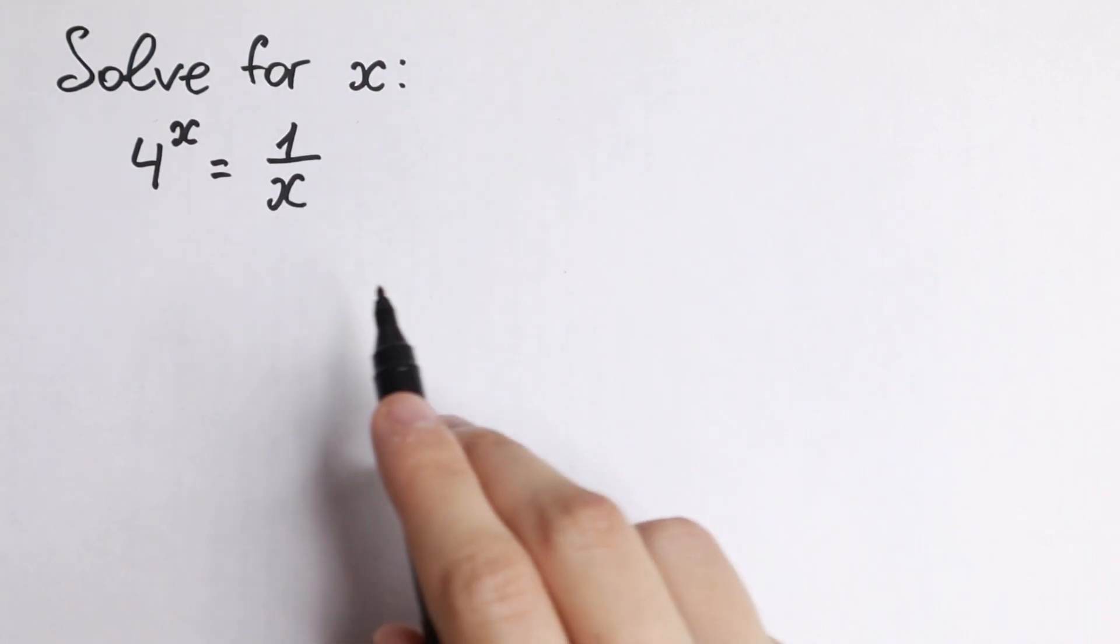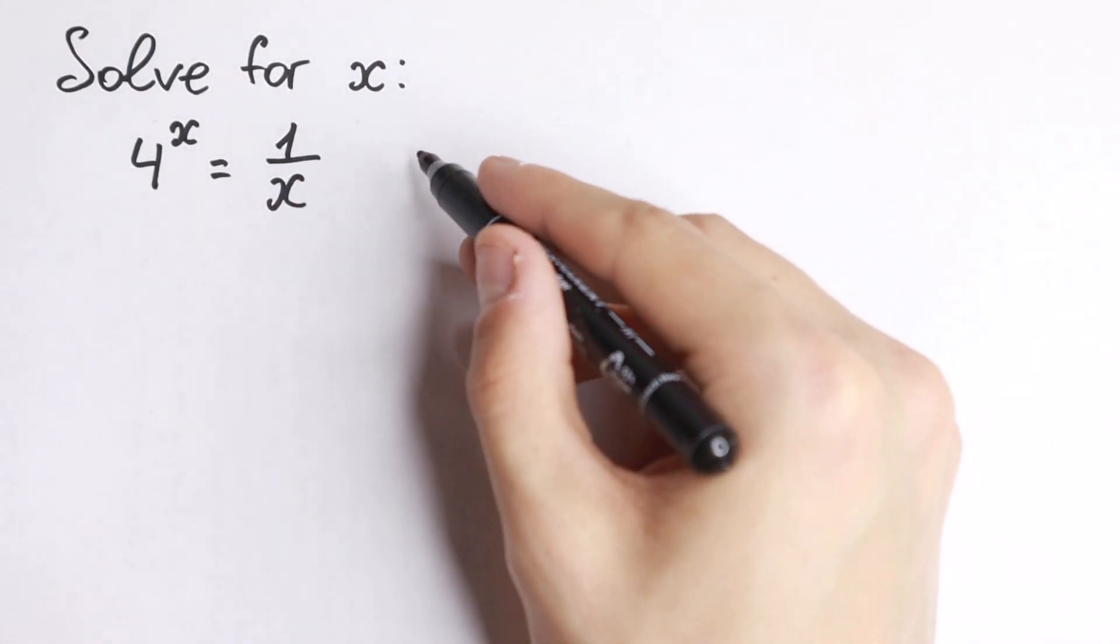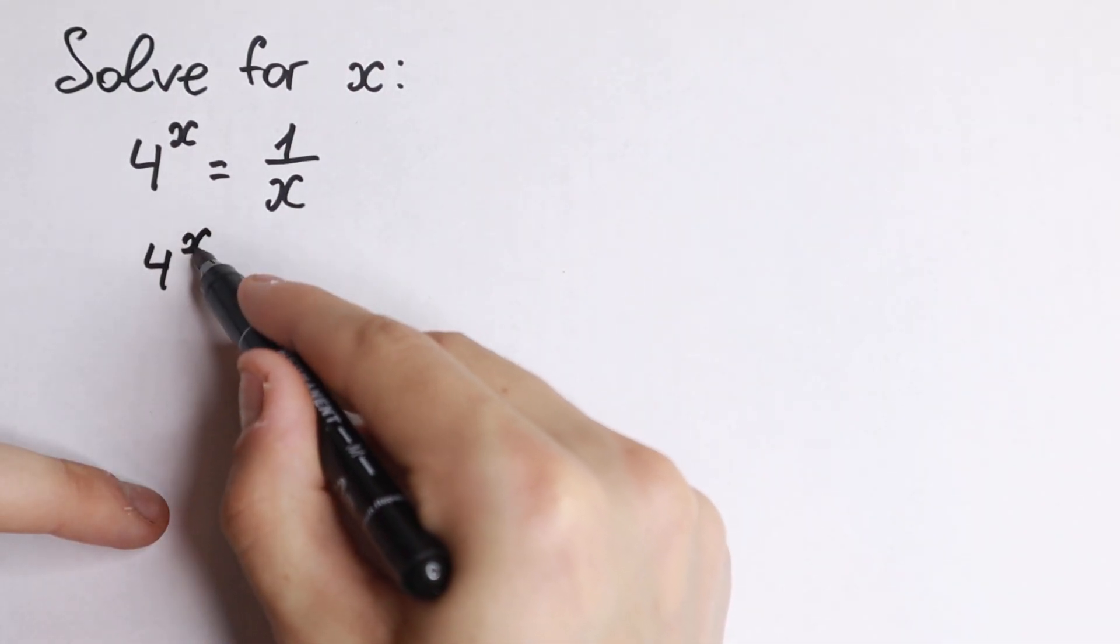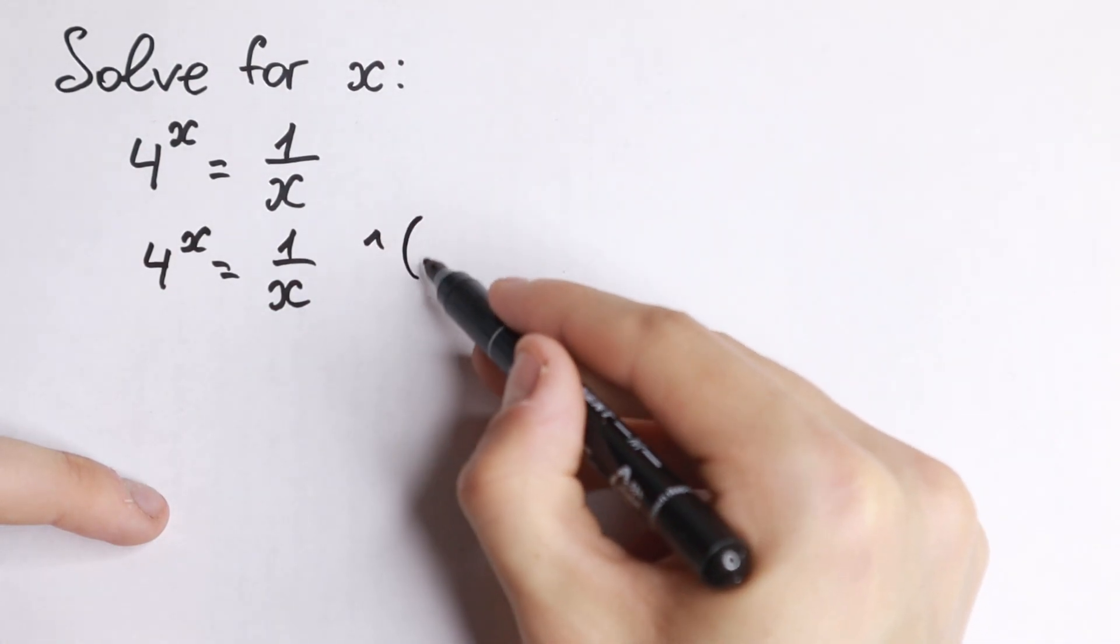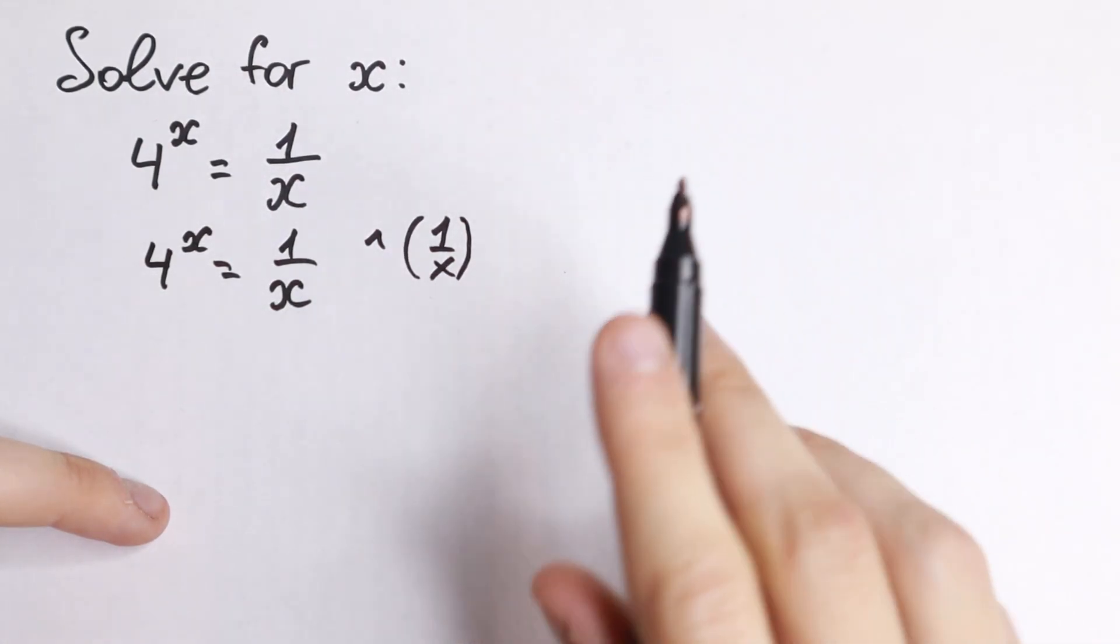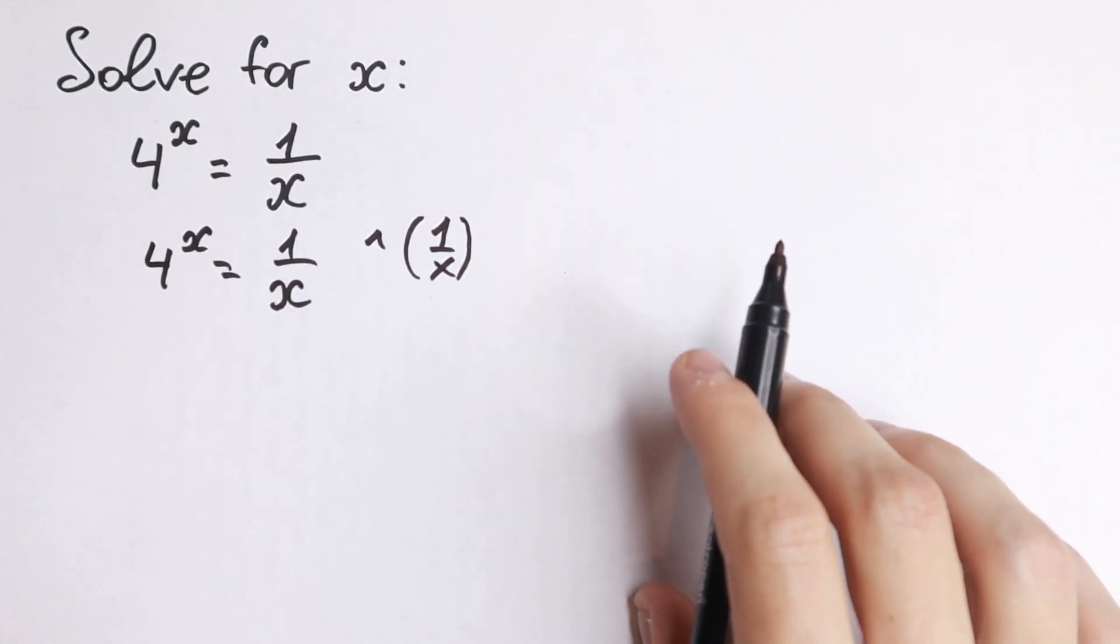I'd suggest you raise both sides to the power 1 over x. So we have 4 to the x equal to 1 over x, and we raise both sides to the power 1 over x. Let's do this trick. I'll show you why this trick is good later.